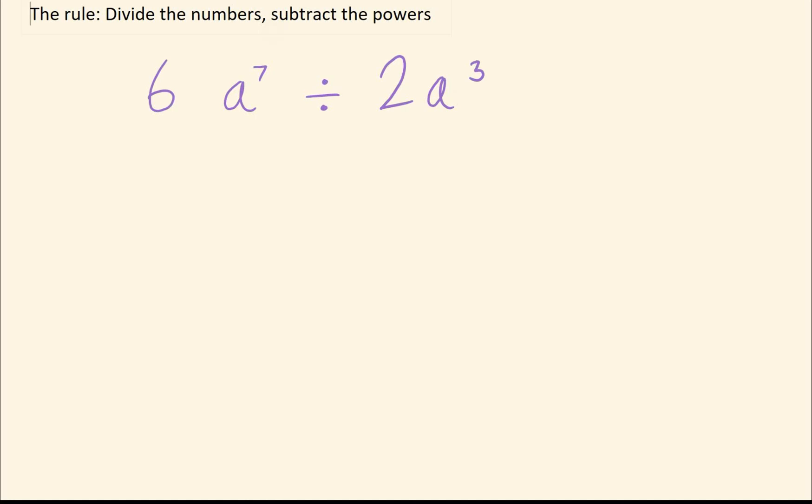Again, seeing that again, 6 divided by 2 is 3. 7 minus 3 is 4. So it would be 3a to the 4.